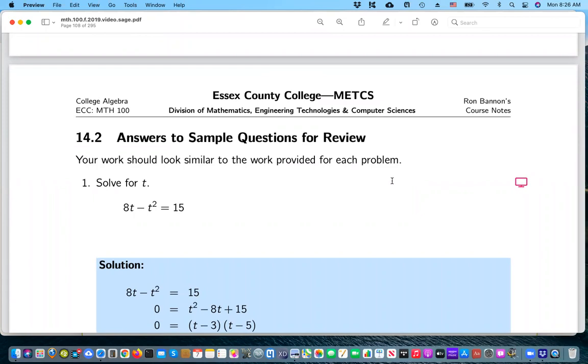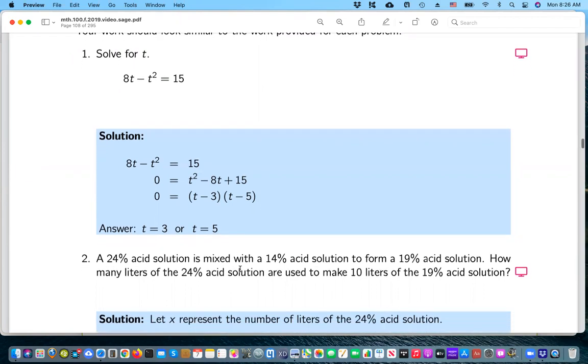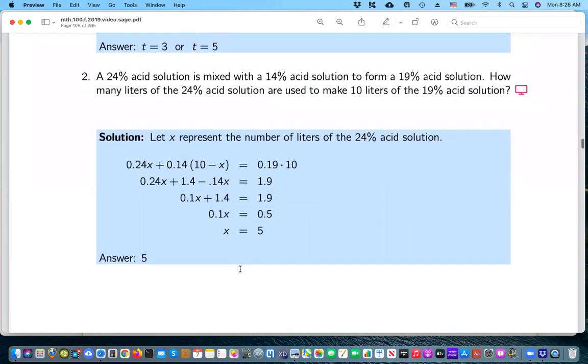You should also self-assess in this. What does that mean? Look at the answer key to make sure you're matching the answers. For example, after you do number one, you should be getting the answers t equals three or t equals five for that question. So you go through all those questions, 20 questions.